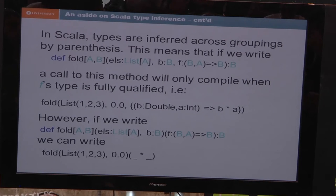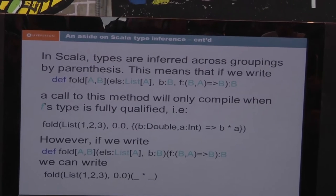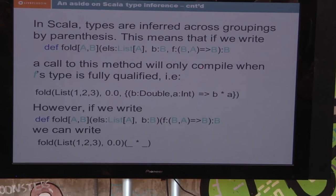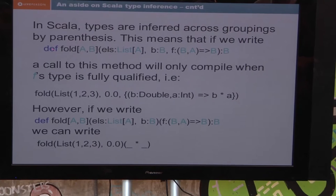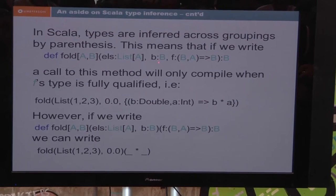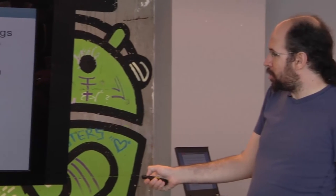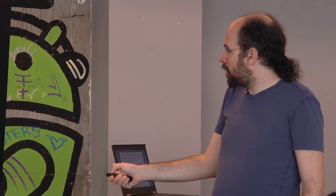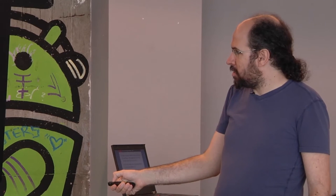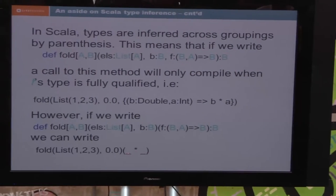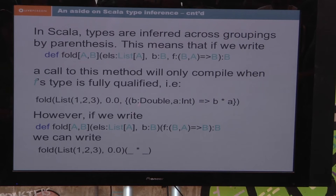In Scala, types are inferred locally, not globally — they're inferred within the same parameter group. Say I was writing a fold with elements, the seed element, and the function. When the compiler tries to infer what A and B are, it knows this is a list of ints and this is a double. But you have to tell it explicitly that the function is from double to int, because this entire equation has to be solved simultaneously. If, however, you write it in two parameter groups, it knows this is an int and this is a double, so the function must be from double and int to double — you don't have to write it explicitly.